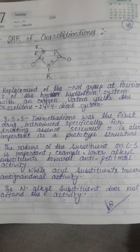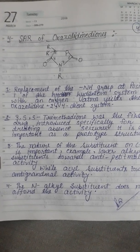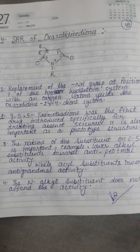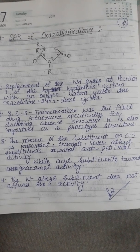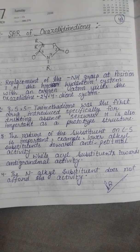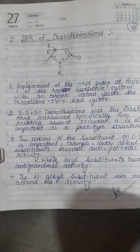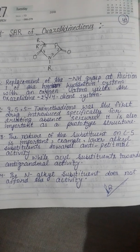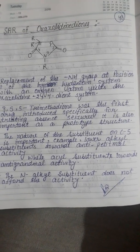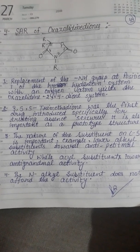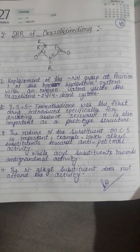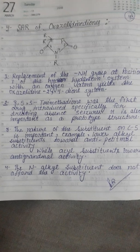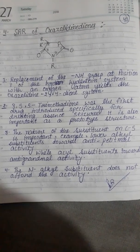Trimethadione (3,5,5-trimethyl) was the first drug introduced specifically for treating absence seizures and is also important as a prototype structure. The nature of the substituent on carbon-5 is important: lower alkyl substituents confer anti-petit mal activity, while acyl substitution confers anti-grand mal activity. An alkyl substituent at the terminal position does not afford activity.